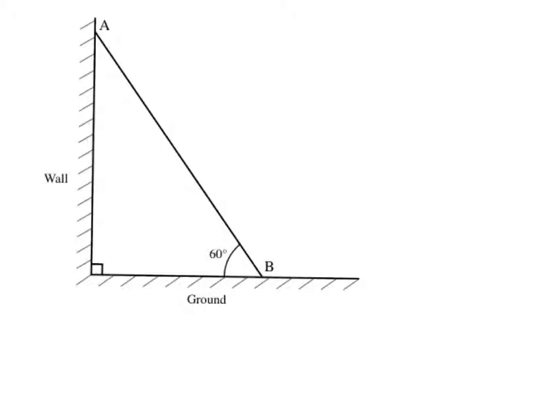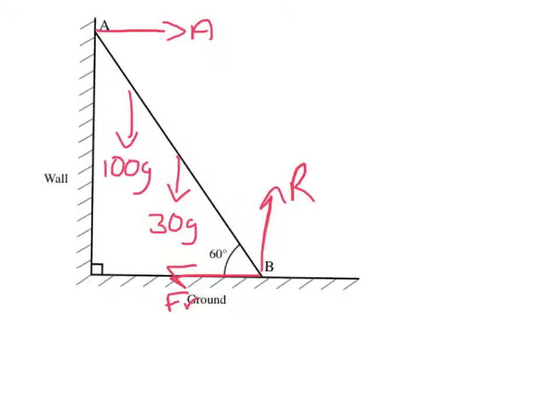I am going to start by adding the reaction forces. We will have a reaction at A and a reaction at B. Ground is rough so I am going to have friction which prevents this ladder from slipping. The weight of the ladder is 30g and the weight of the man is 100g.